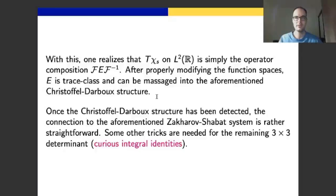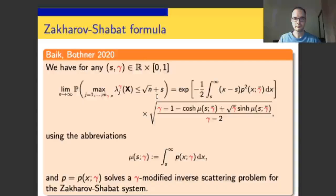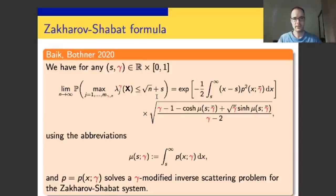After some calculations, out comes exact formula for the limiting distribution function. Tracy-Widom factor here out front, but not depending on Painlevé function, but on solution to inverse scattering problem. And then some combinations of hyperbolic functions. Those functions are defined in terms of the anti-derivative of solution to inverse scattering problem. So this is again where Professor Schrödinger appears.